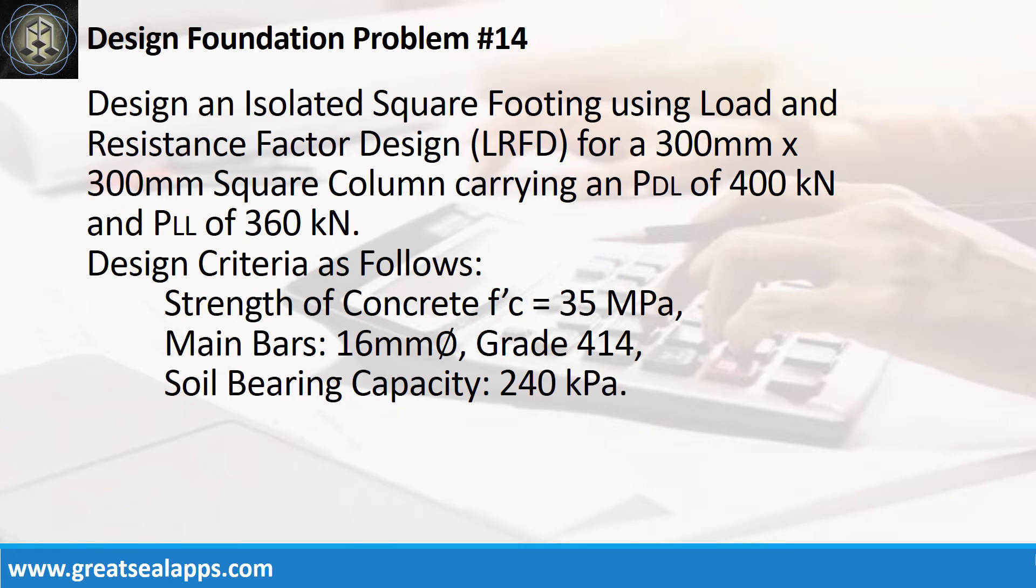Design an isolated square footing using load and resistance factor design for a 300 mm by 300 mm square column carrying an axial dead load of 400 kN and axial live load of 360 kN. Design criteria as follows: strength of concrete, f'c = 35 MPa, main bars, 16 mm diameter, grade 414, soil bearing capacity, 240 kPa.